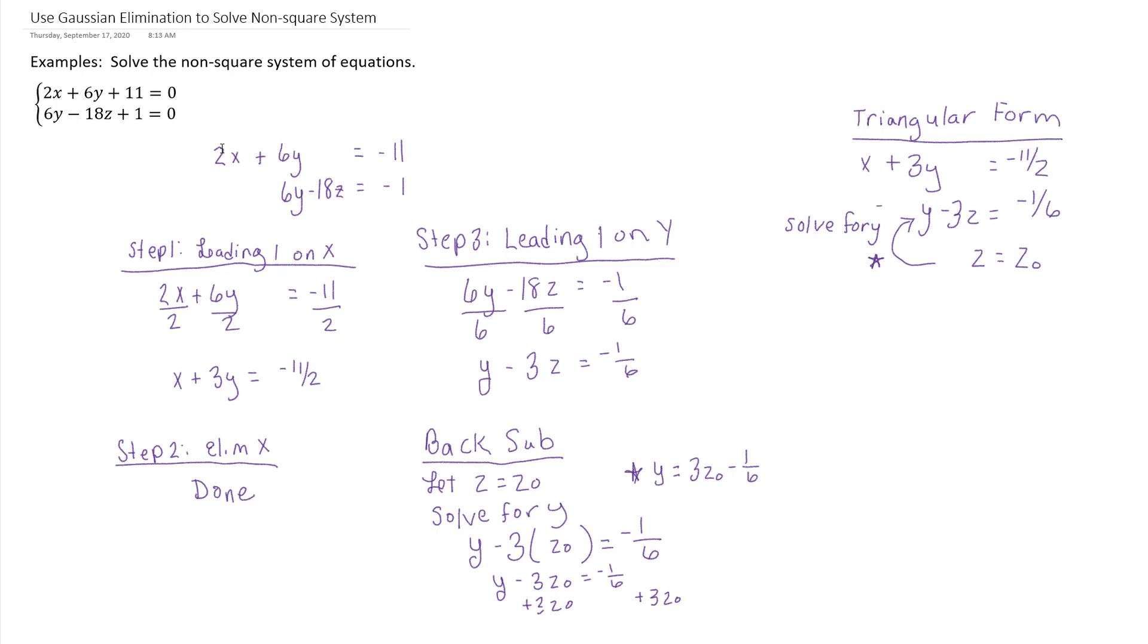Keep that in mind. You're going to use that along with the fact that z is z naught. When we back up here, we're going to end up having to solve for x, but we're going to use the two equations that I starred. So this is still part of our back substitution. We're going to let z equals z naught, but we're also going to use the fact that y equals 3z naught minus 1 sixth, and we're going to solve for x.